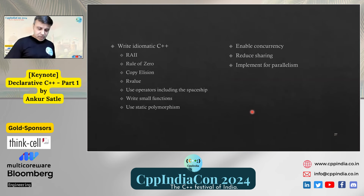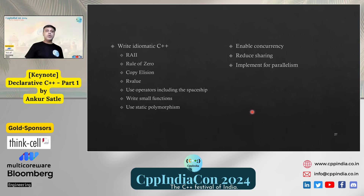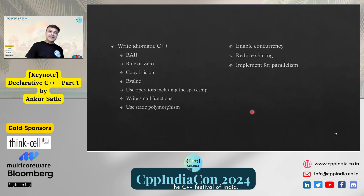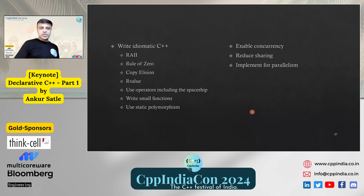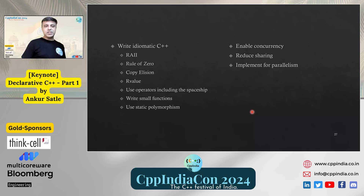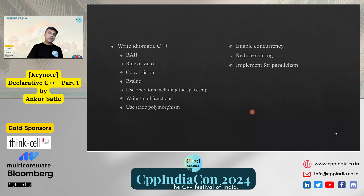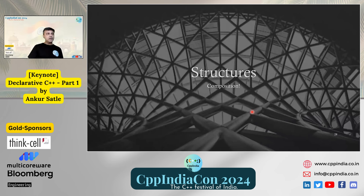Some healthy reminders for declarative C++: write idiomatic C++ — use RAII, rule of zero, copy elision, rvalue references, use temporaries, use operators including spaceship. Delegate as much as possible to the compiler. Write small functions and use static polymorphism so many functions get inlined. Enable for concurrency, reduce sharing, and implement for parallelism.